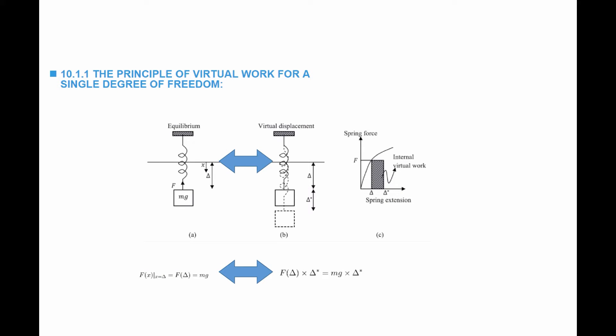If equilibrium is perturbed by displacement delta star, then we say that the internal virtual work, which is the work done by the force in the spring, is equal to the external virtual work, which is the work done by the external force mg. When we look at the equation, it is as if we're taking the equilibrium equation f(delta) = mg and multiplying both sides by delta star. So f(delta) multiplied by delta star is equal to mg multiplied by delta star.